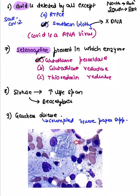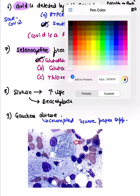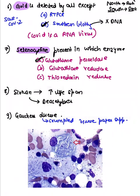A question on selenocysteine was asked. Selenocysteine is the 21st amino acid and is present in glutathione peroxidase. Regarding sirtuin — from pathology — it increases lifespan and is a histone deacetylase.